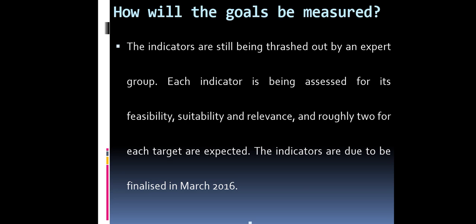How will the goals be measured? The indicators are still being worked out by an expert group. Each indicator is being assessed for its feasibility, suitability, and relevance, with roughly two indicators expected per goal. The indicators were due to be finalized in March 2016.